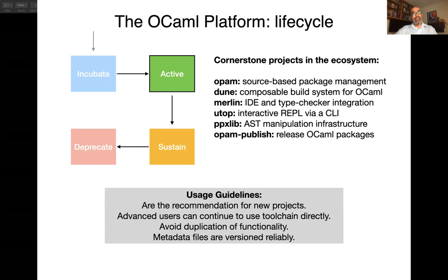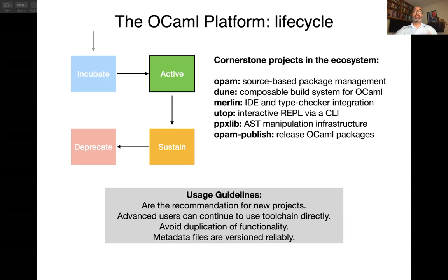We also want to make sure that any metadata files added to source code are versioned reliably using active projects. Both OPAM and Dune have versioned file formats and support interpreting very old versions of those file formats. For example, if you give OPAM a version-one file, it will transparently upgrade and migrate to version two. Dune will do similar things: if you have a Dune file written as supporting Dune 1.3, using the latest Dune client 2.7.0, it will pretend to be Dune 1.3 when interpreting and executing those rules. Projects can decide when they want to update their own metadata to the latest versions.